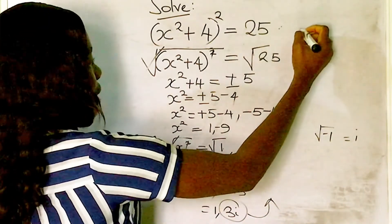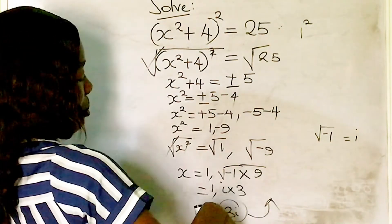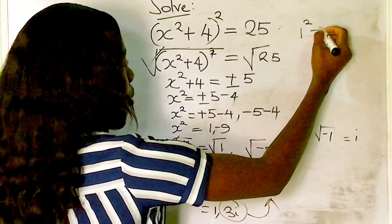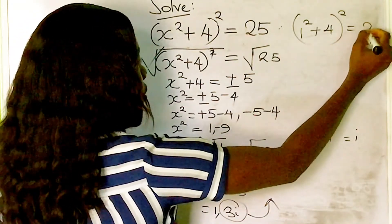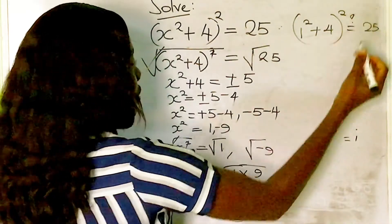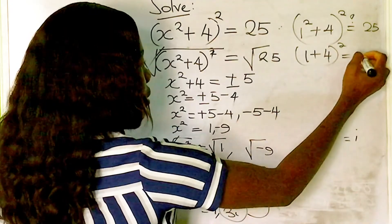Let's see if this gives us 25. 1² = 1, so (1 + 4)²...